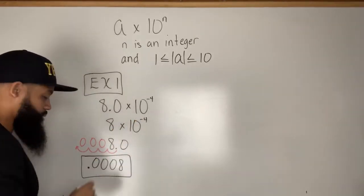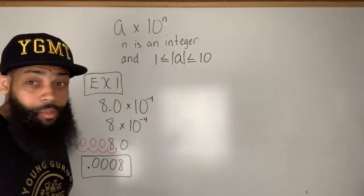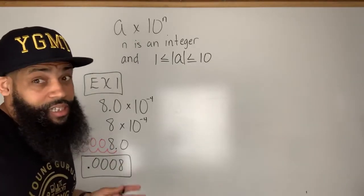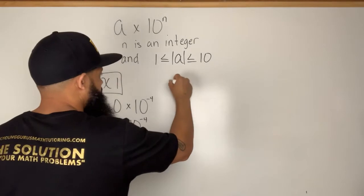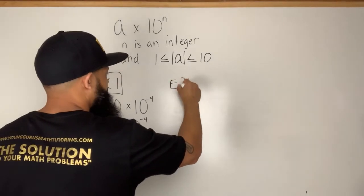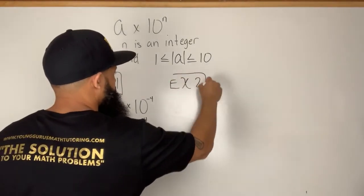So eight times ten to the negative four equals eight ten-thousandths — 0.0008. That's our standard form for example one. Now let's do another example.